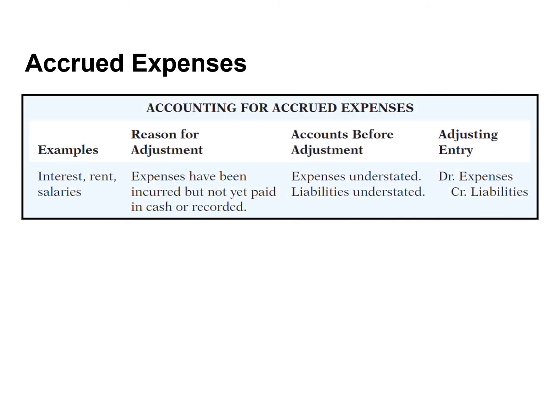Expenses incurred but not yet paid or recorded at the statement date are called accrued expenses. Interest and salaries are common examples. Prior to the adjustment, both liabilities and expenses are understated. An adjusting entry for accrued expenses results in an increase, or a debit, to an expense account and an increase, or a credit, to a liability account.